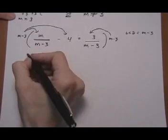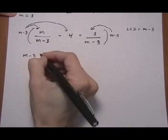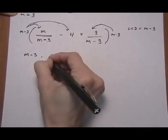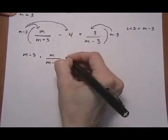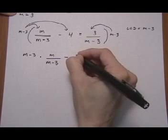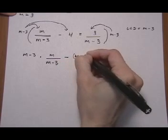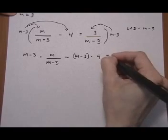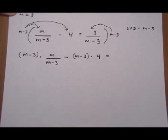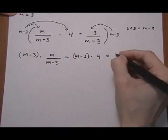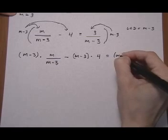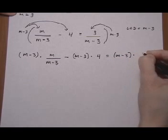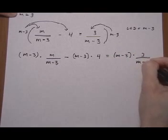And the m minus 3 multiplies each term once. So now I can distribute. m minus 3 multiplies m over m minus 3. Take away m minus 3 multiplying 4. I guess I'll put parentheses there too, just to be consistent. Equals m minus 3 multiplying 3 over m minus 3.